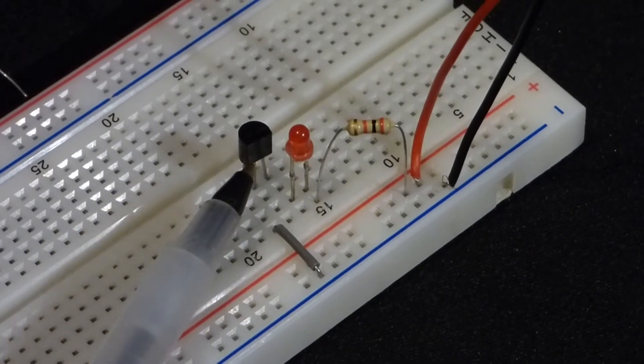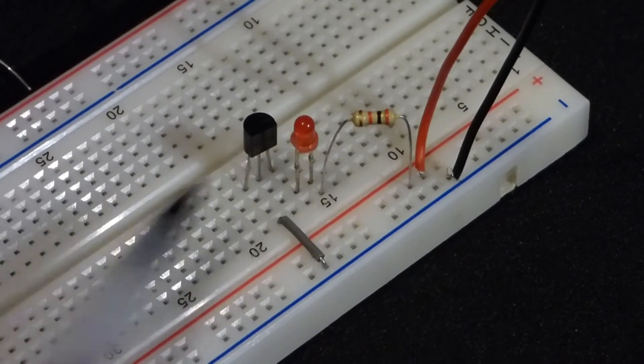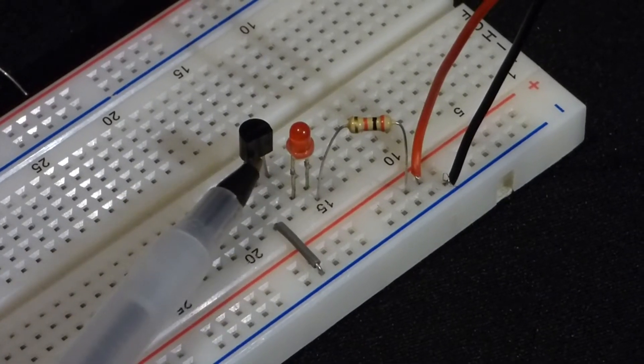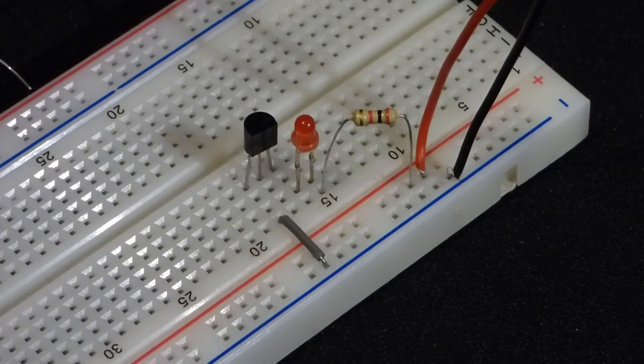So this is the 2N2222 transistor, it's an NPN type bipolar junction transistor. It's really the most common one used in hobbyist electronics, the most well known.